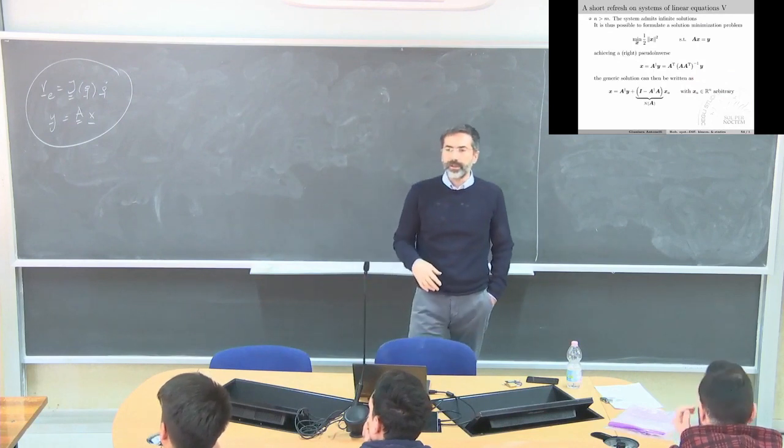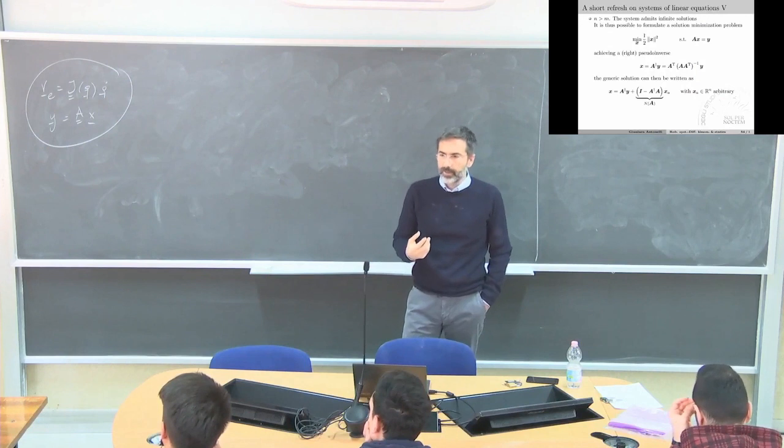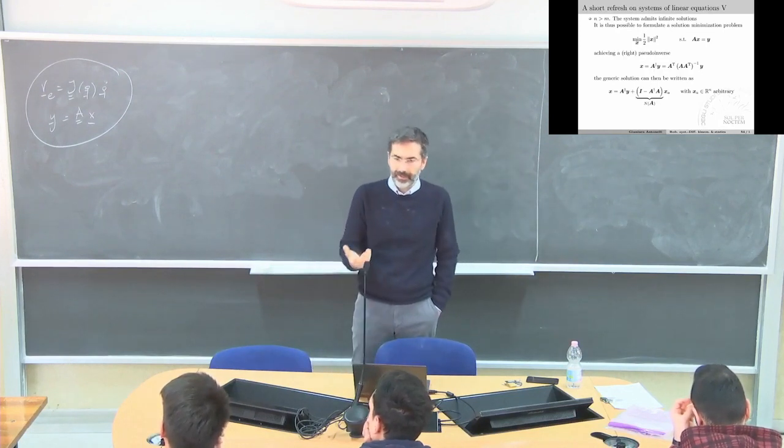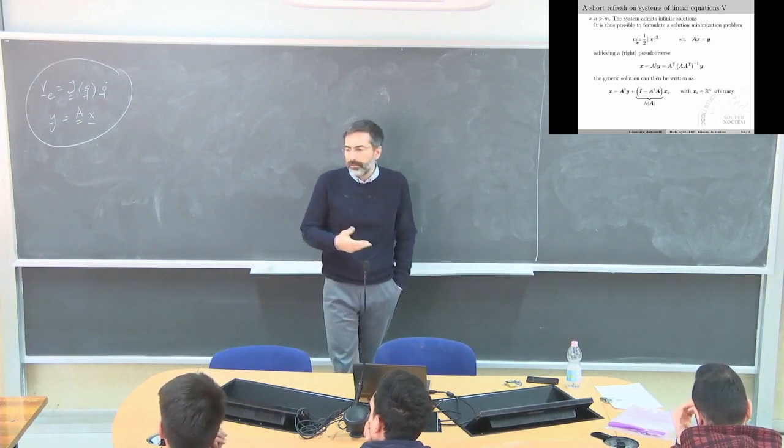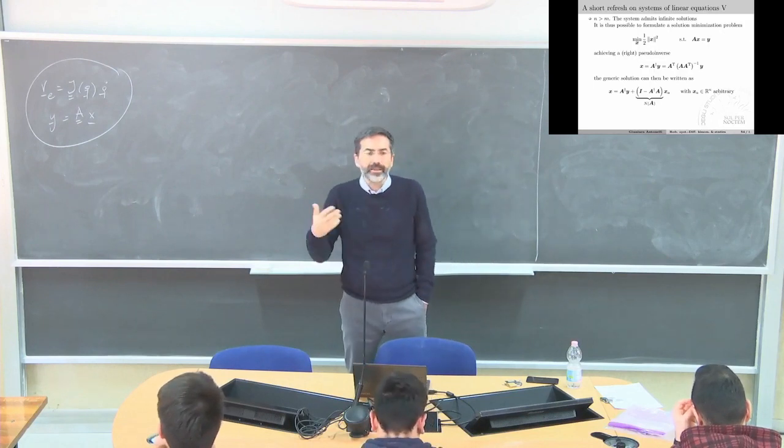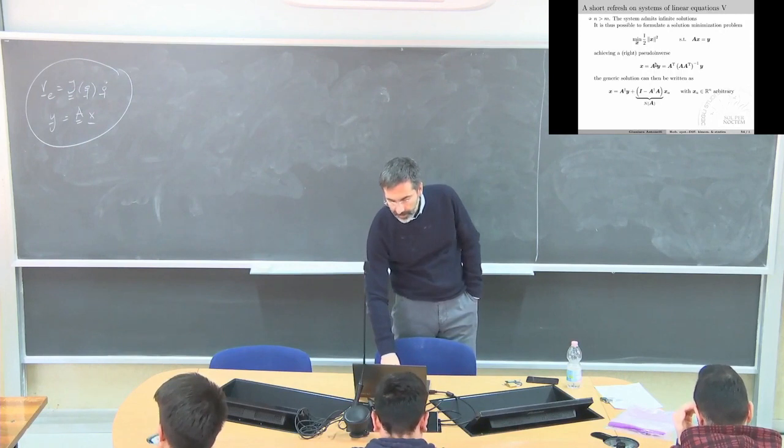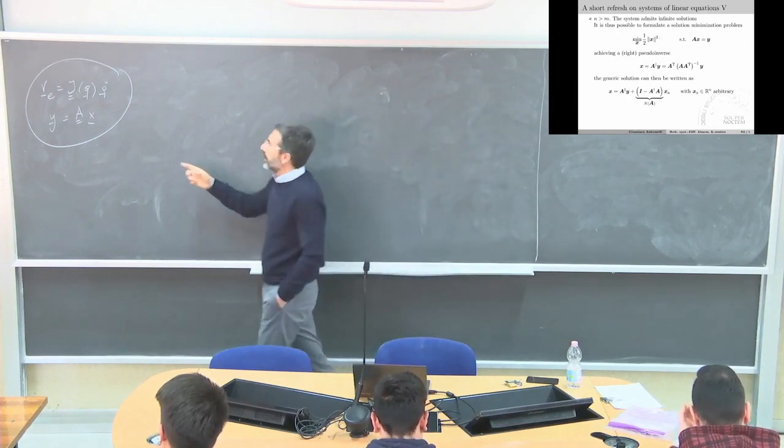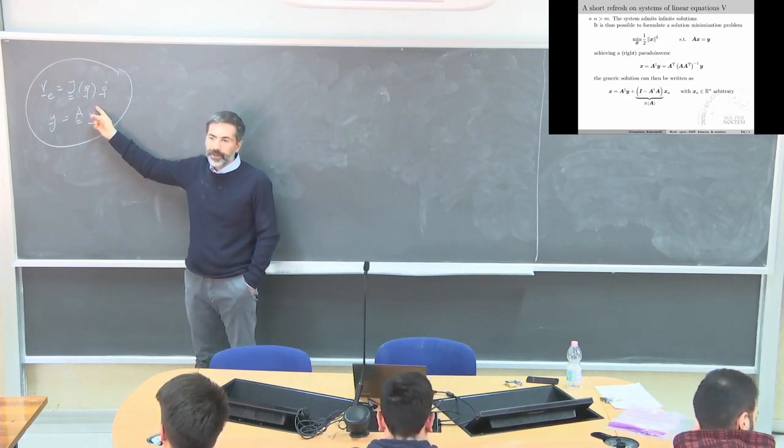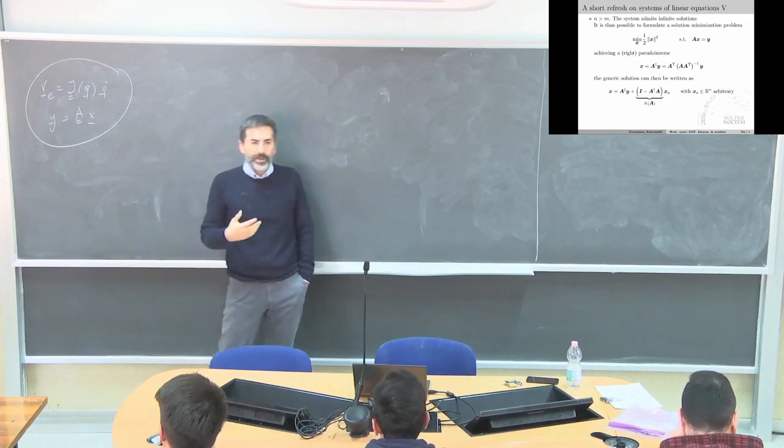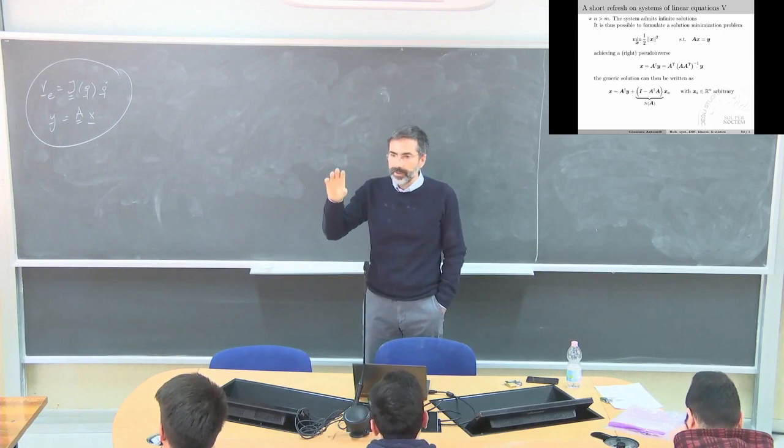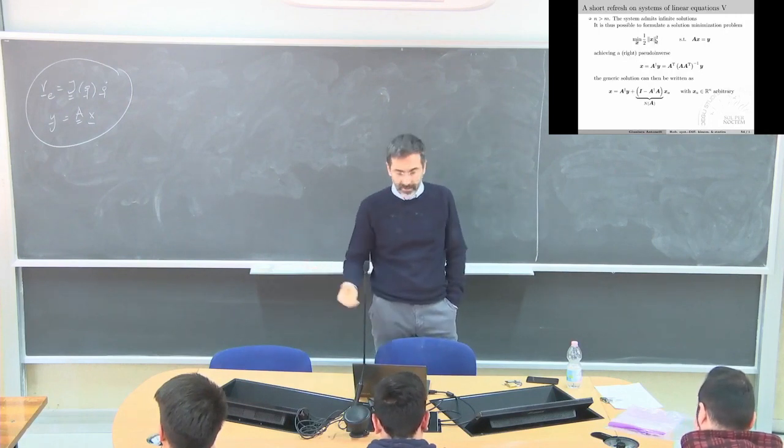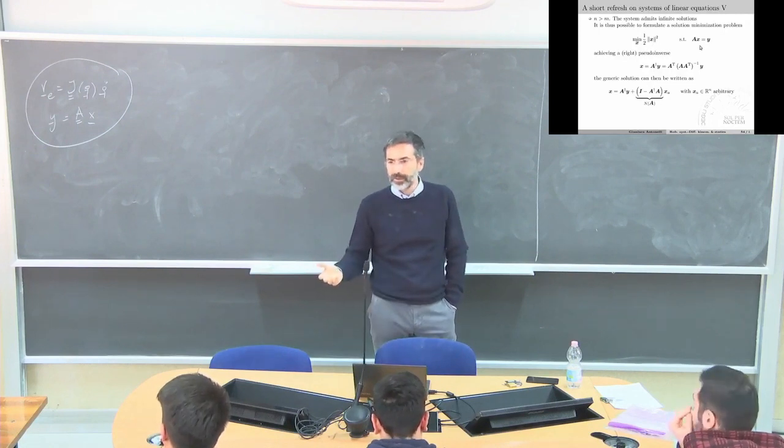This is the situation that we will meet in robotics. The situation where we do have more unknowns than equations. It means that we do have infinite solutions. And, if we have infinite solutions, each of the solutions is a solution, so it's okay. Let us pretend something more. We do pretend, for example, to find the solution with minimum norm. Why? Well, in our case, if we have infinite solutions, it means that we have infinite joint velocities. And, for obvious energetic and engineering reasons, it's better if we keep the norm of the velocity as small as possible. So, it does have sense to minimize the norm of the solution.